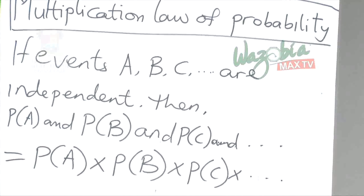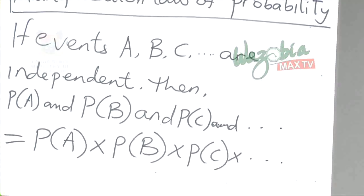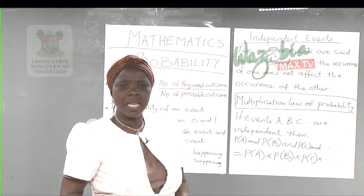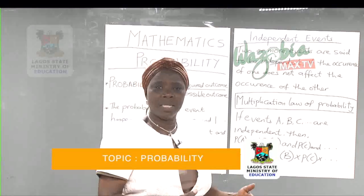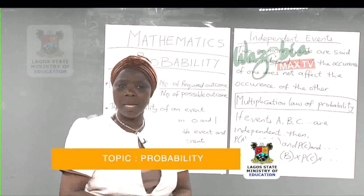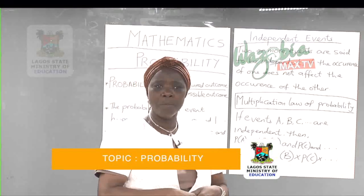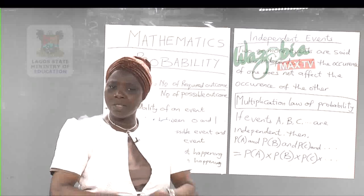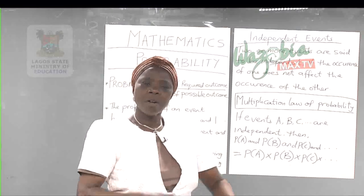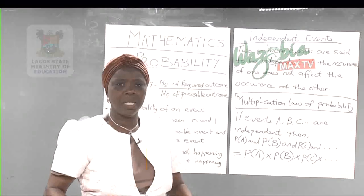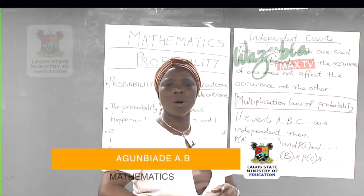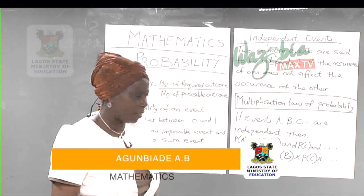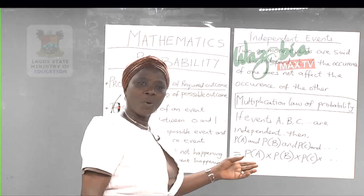Another example of independent events is in the classroom. If the success of any student does not affect the success of others — like if Kain De passes, it doesn't affect whether Tokwe or Tolu passes — Tolu may pass or fail, Joka may pass or fail. The success or failure of one student has no effect on the success or failure of the other students in the class.